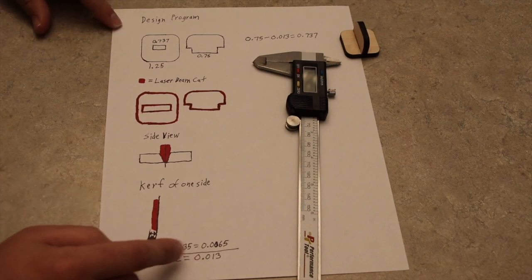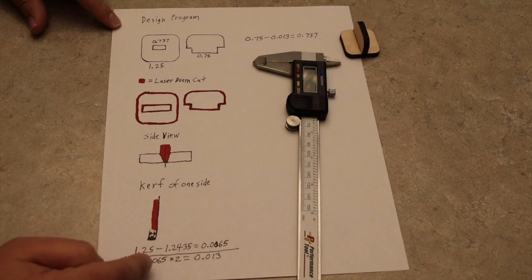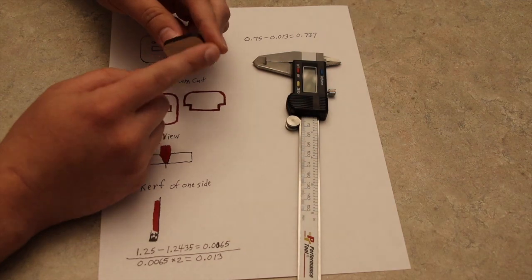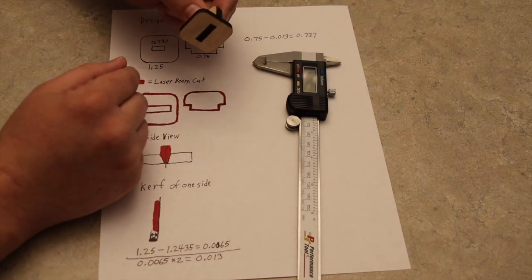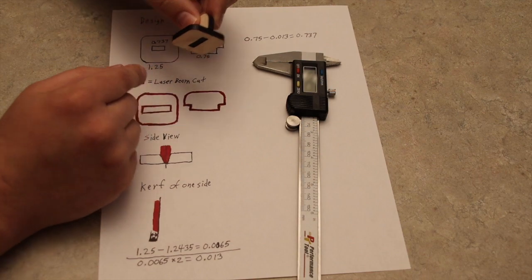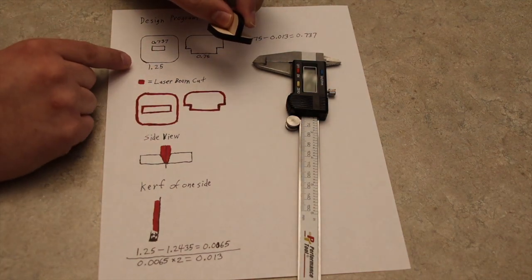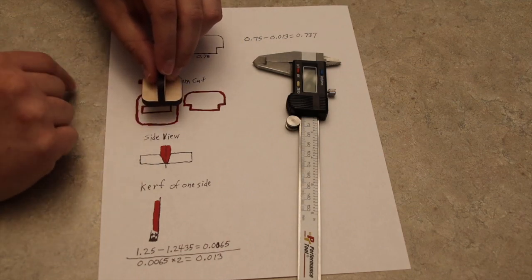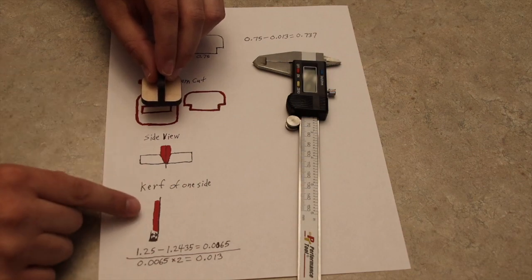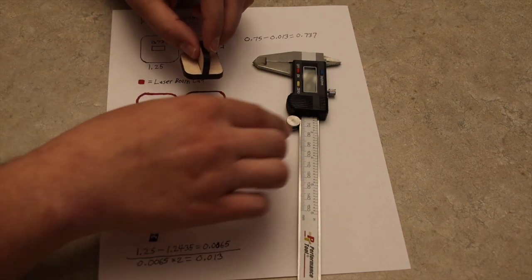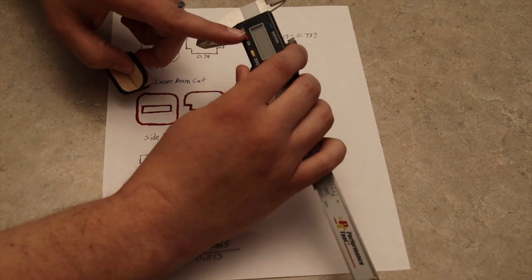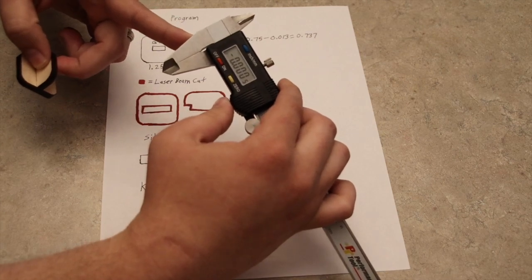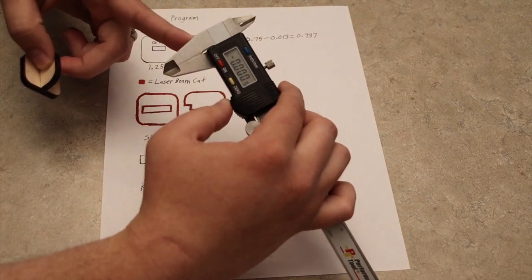You're probably wondering what all these numbers down here mean. You can do a quick easy test to find your kerf. You'll just print off a simple square, for example. The design itself was 1.25 inches, but after the laser cut out, it's going to have the difference on that outside edge, which would be the kerf of one side. You're going to use this digital caliper that I talked about in the previous video.